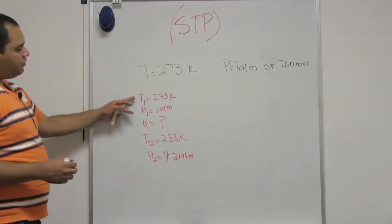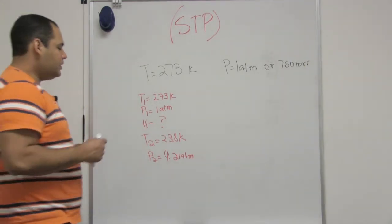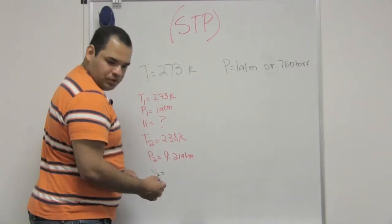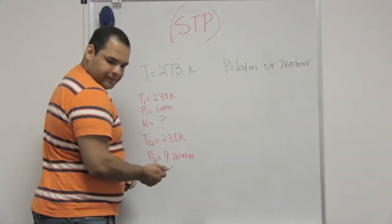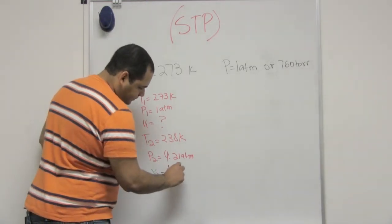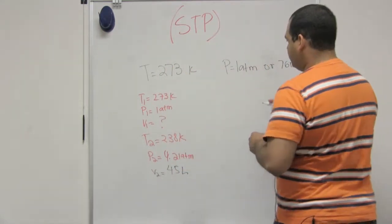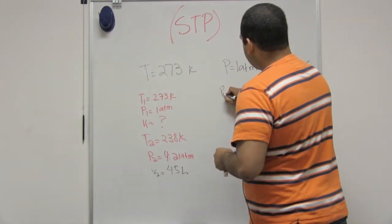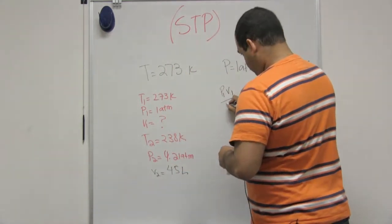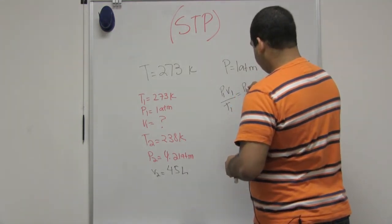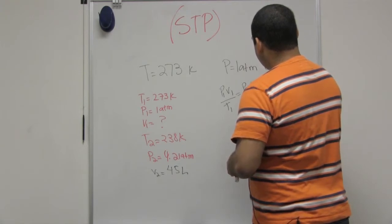So I know that I have T1, P1, V1, T2, P2 and V2 equals to 45 liters. So what is the initial volume? So I need to use the combined equation that gives me P1 V1 over T1 equals P2 V2 over T2.